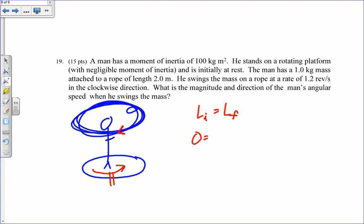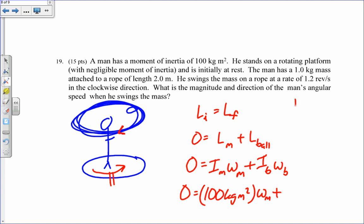And then, finally, the man has a certain angular momentum. I'm going to call this Lm. And the ball that he's swinging over his head has an angular momentum. So zero is equal to the I of the man, omega of the man, plus I of the ball, omega of the ball. I of the man is 100. That's given explicitly in the problem. Omega is what I want to find. Plus, I of the ball is Mr squared. I just treat it like a discrete particle. That's one times two squared, one kilogram times two meters squared, which is four. So it's going to be four times omega ball, which is 1.2.